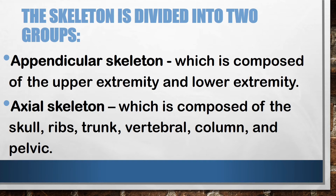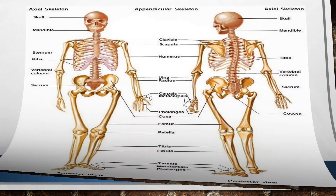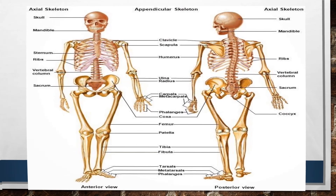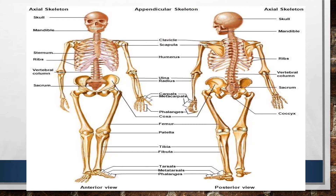For the appendicular skeleton, we have the skull, mandible, clavicle, scapula, humerus, ulna, radius, carpals, and metacarpals. We also have the sternum, ribs, vertebral column, and sacral. For the lower part of the skeleton, it includes the coccyx, femur, patella, tibia, fibula, tarsals, metatarsals, and phalanges.